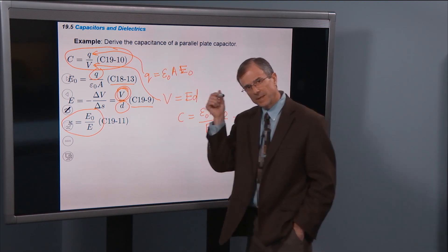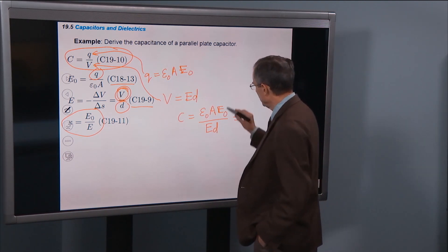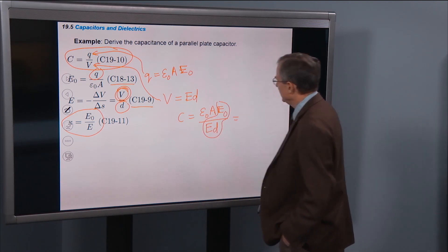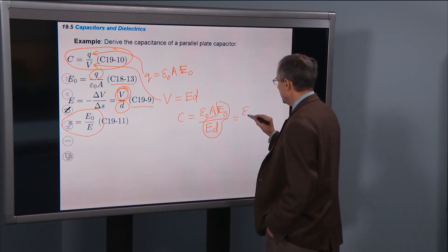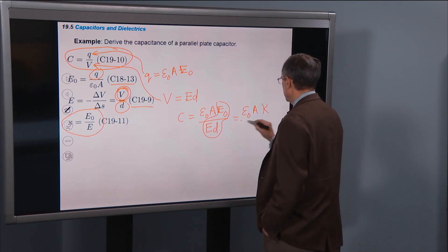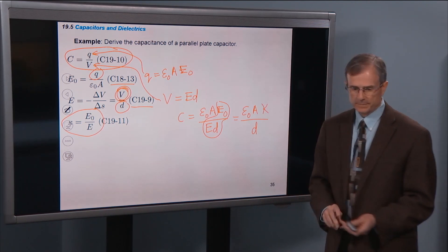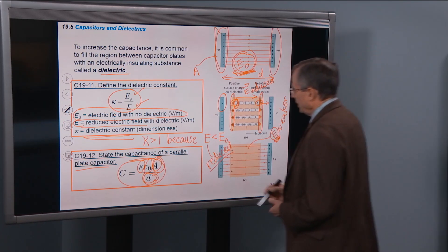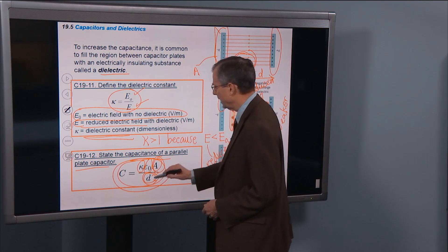And then we use this fact. The kappa is defined as E0 divided by E. Well here's my E0 divided by E. That gives us ε0A kappa over D. And that is this. Kappa ε0A divided by D.